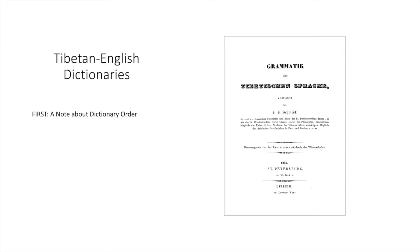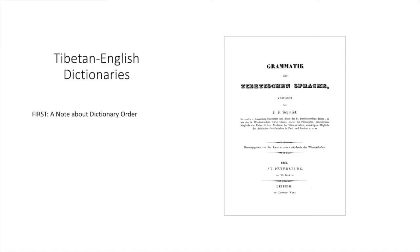If you consult other Tibetan dictionaries produced during the 19th and 20th centuries, you will discover that they do not follow this alphabetization scheme and instead typically sort words in straight letter sequence. I mention this because these dictionaries still have some usefulness and occasionally will contain entries and translations not found in other dictionaries. Consequently, for a beginning student in Tibetan studies, Sarat Chandra Das's Tibetan-English dictionary remains the best all-purpose dictionary to have been published.